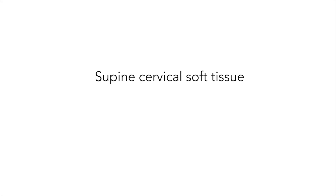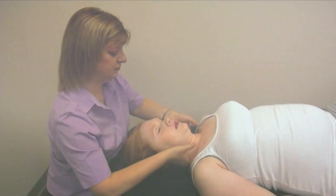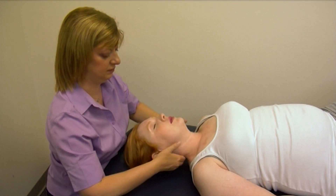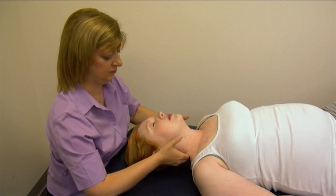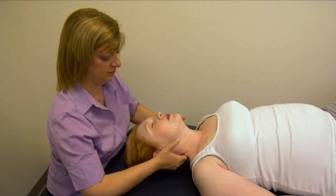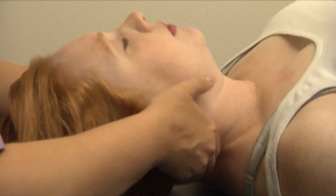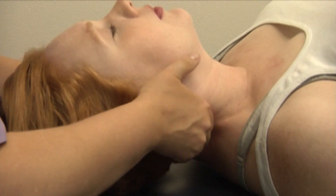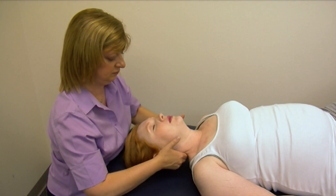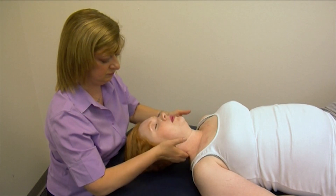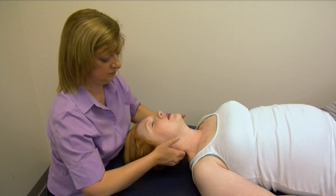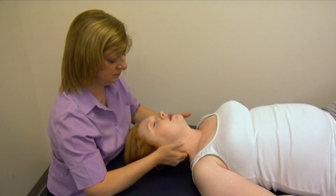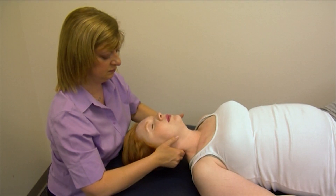The next technique is cervical soft tissue. The subject lays supine with the physician at the head of the bed. The medial aspect of the cervical paraspinal muscles is contacted. The physician draws the tissue anteriorly in a kneading fashion, moving up or down the cervical spine until all tissues have been treated. This is continued until the relaxation of the tissues is palpated.